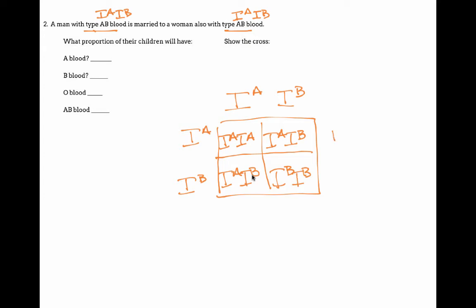So my possible genotypes are I^A I^A, I^A I^B, I^B I^B. So 25% I^A I^A, 50% I^A I^B, 25% I^B I^B.